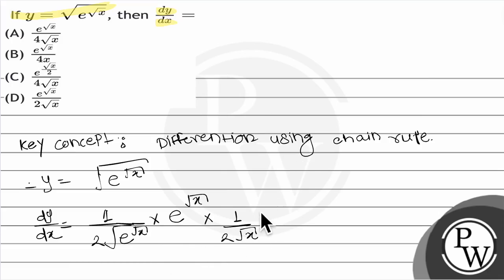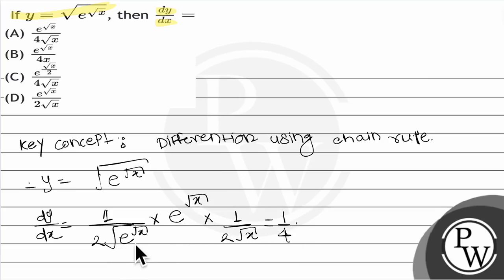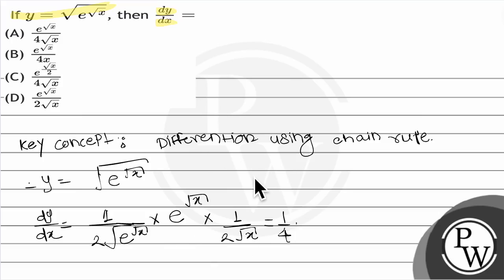If you simplify this, you get one by two into one by two, which will be one by four. Shifting that denominator to the numerator, it is e to the power root x raised to one by two, and in the numerator the exponent will be one minus one by two, which gives one by two.